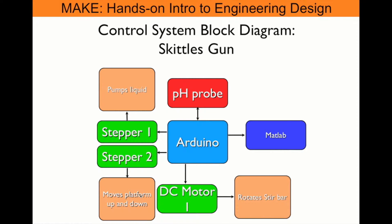This platform houses the pH probe, a DC motor that has some kind of stirring mechanism to cause turbulence within the solution, and a nozzle which will dispense base into the acidic solution underneath it.